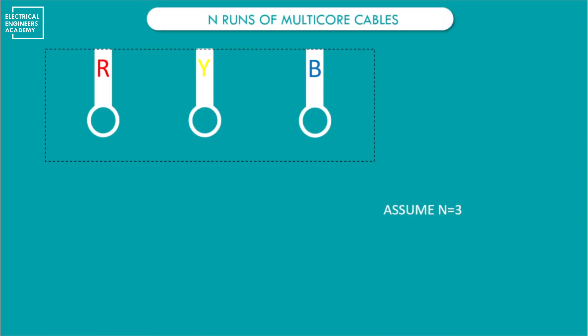To start with, we have two cases — let's limit it to two cases for the sake of simplicity. The first case is n runs of multi-core cables. Our load is connected using n runs, which can be any number — one, two, three, etc. — and represents the number of cable runs connecting our load. The second case involves single-core cables, which is the main source of confusion for many engineers, both experienced and new.